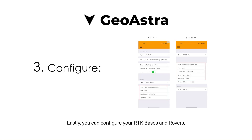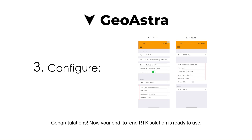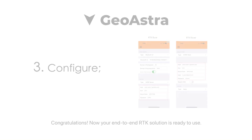The last step is to configure and connect your RTK bases and rovers. You simply do this by entering the Ntrip settings listed in the GeoAstra dashboard screen. Congratulations — now your end-to-end RTK solution is ready to use.